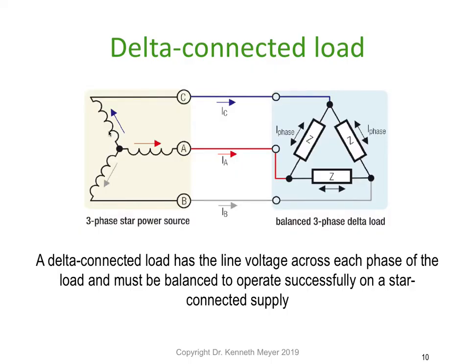Welcome back to lesson 10: three-phase Delta connections, part two - Delta connected loads. On the left hand side we have a three-phase star power source, probably a generator, and on the right hand side a balanced three-phase Delta load. A Delta connected load has a line voltage across each phase of the load and must be balanced to operate successfully on a star connected system. Here you can see we have a star supply as the generator but our load is connected in Delta.